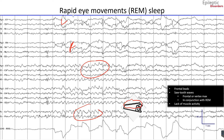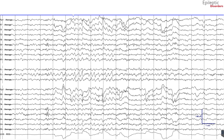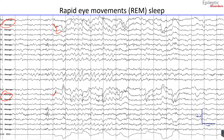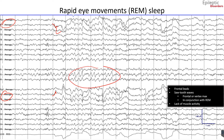An important concept in REM sleep is the lack of myogenic artifact. This EEG in average montage also shows rapid eye movements noted in the F7 and F8 channels. In the fourth second of the page, you can see a downward deflection in the F7/T1 leads and a concordant upward deflection on F8, indicating gaze deviation towards the left. In the central midline channels, sawtooth waves occur in conjunction with the rapid eye movements.